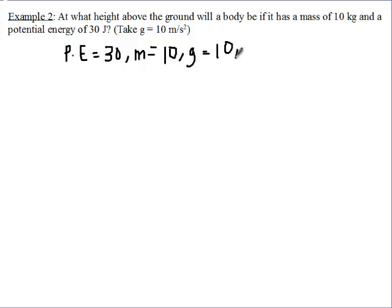But we don't know what h is. That is what we've been asked to find. Now PE, potential energy, PE is equal to mass times gravity times height.